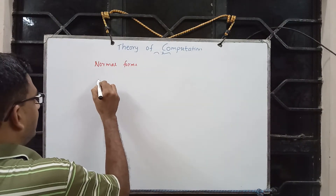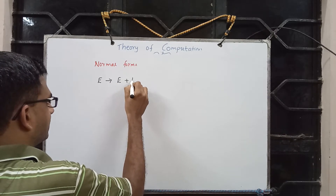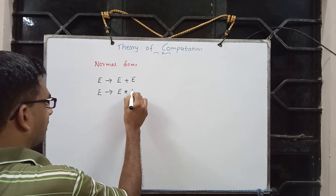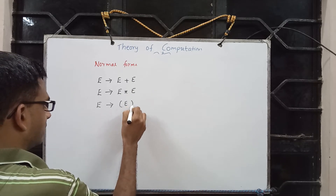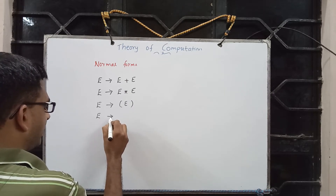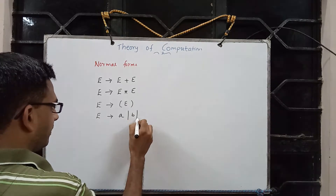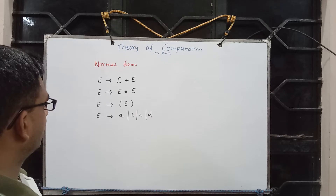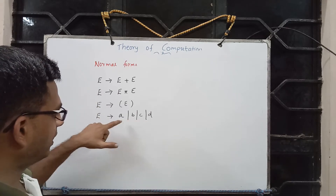Here is our next example: E implies E plus E, E implies E star E, E implies left parenthesis E right parenthesis, and E implies a non-terminal A or B or C or D. Capital E is a non-terminal, and these four — plus, star, left parenthesis, right parenthesis — are terminals.